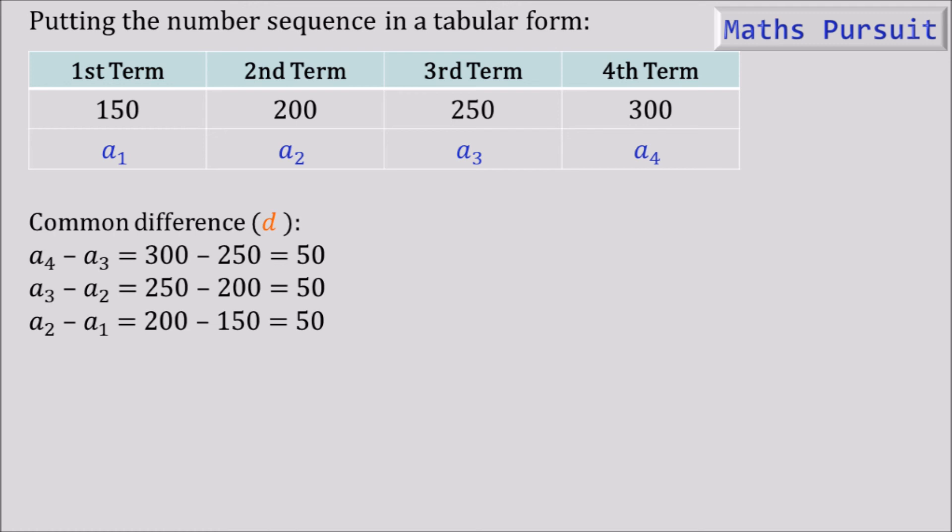We can see that we are getting a common difference of 50 among the consecutive numbers. So we can understand that looking at the common difference, it is forming an arithmetic progression.